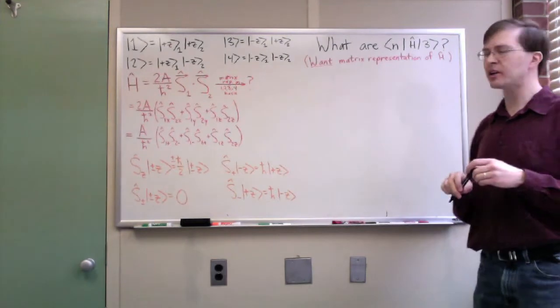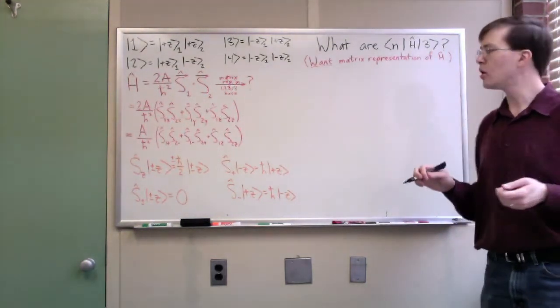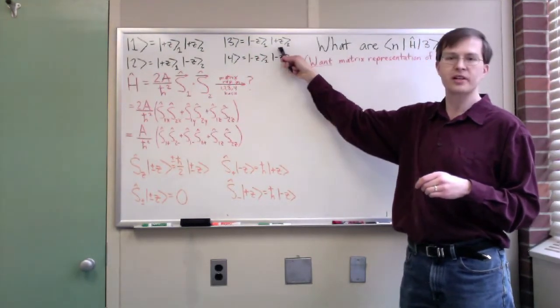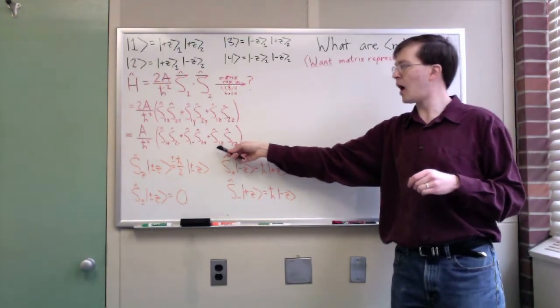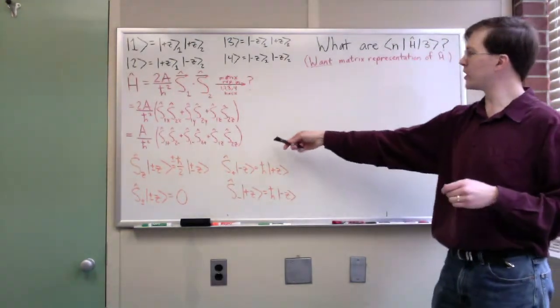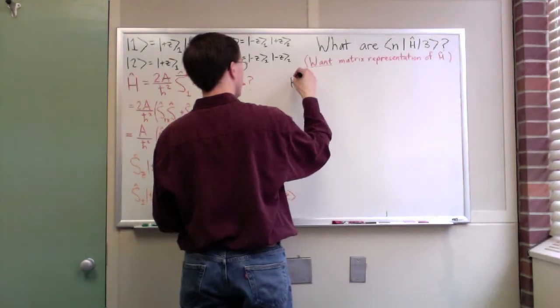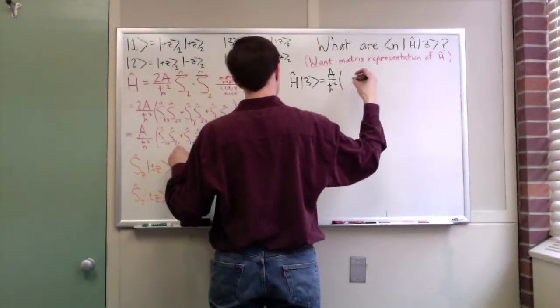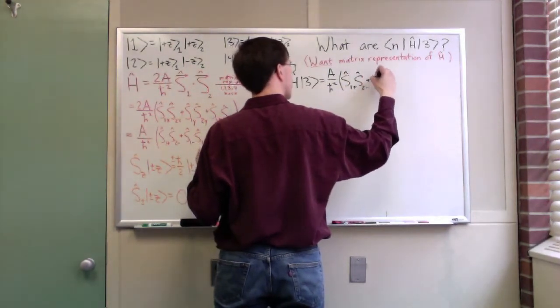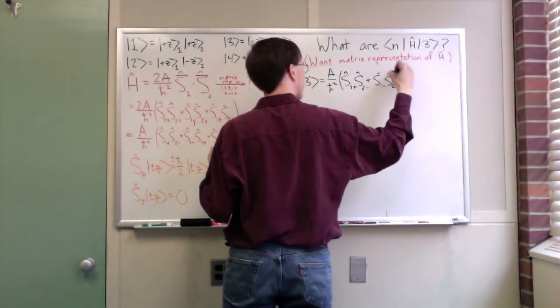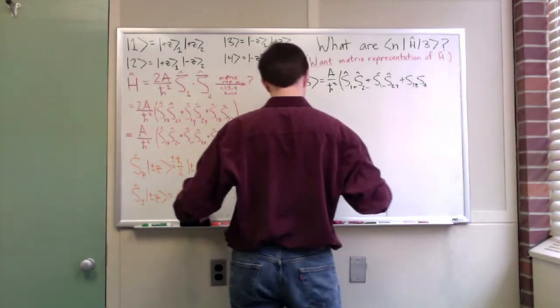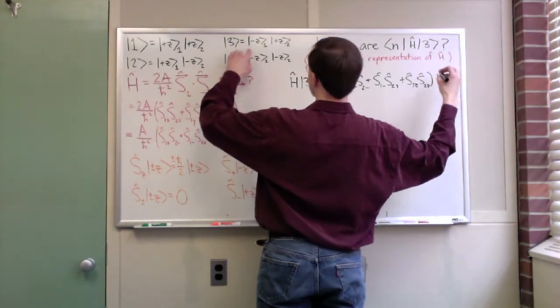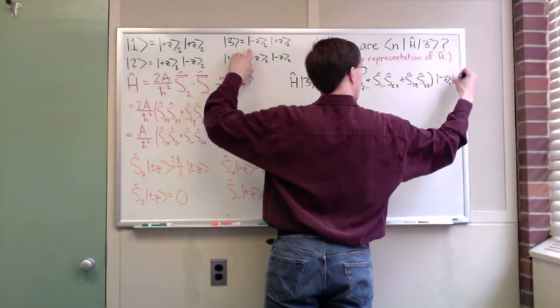The first step we're going to take is just to apply our Hamiltonian operator to ket 3, to state 3. We're going to just apply this operator and see what we get. We know what the definition of state 3 is. It's minus z for particle 1 and plus z for particle 2. And we know what the Hamiltonian is in operators, the plus and minus operators and the z's that act on those states. We're going to work out what is h-hat applied to 3.